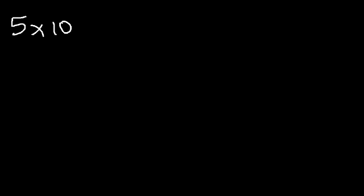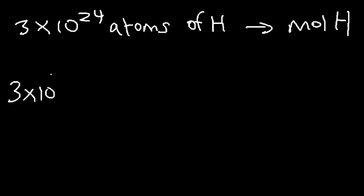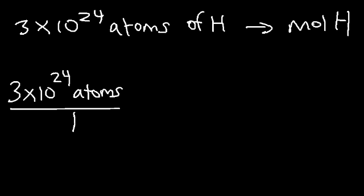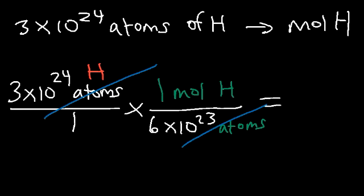Now let's work backwards. If we have 3 times 10 to the 24 atoms of hydrogen, how can we convert it into moles of hydrogen? To go from atoms, molecules, or formula units back to moles, start with the number you have over one, then use Avogadro's number — but this time on the bottom. On top, place one mole of hydrogen. The unit atoms cancels, so you simply divide by Avogadro's number.